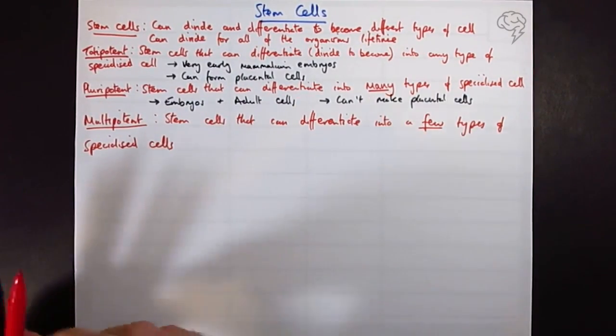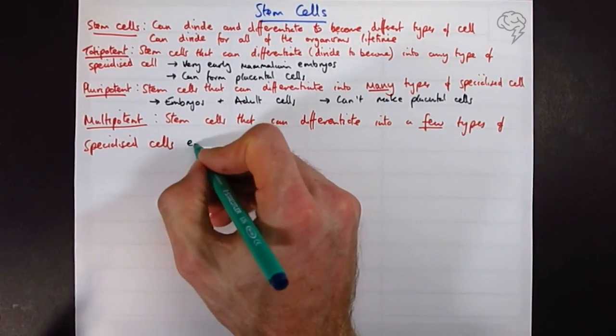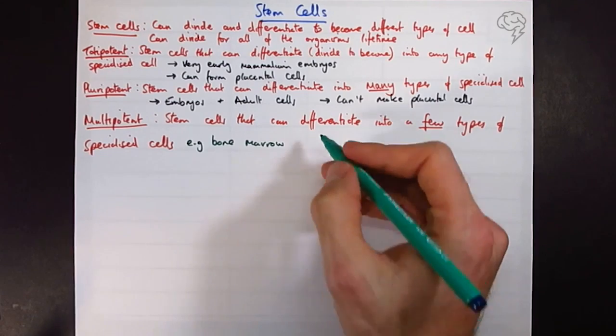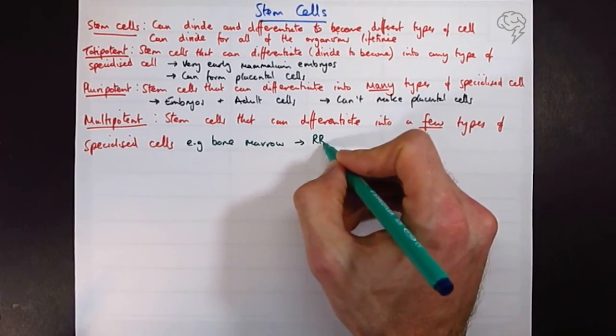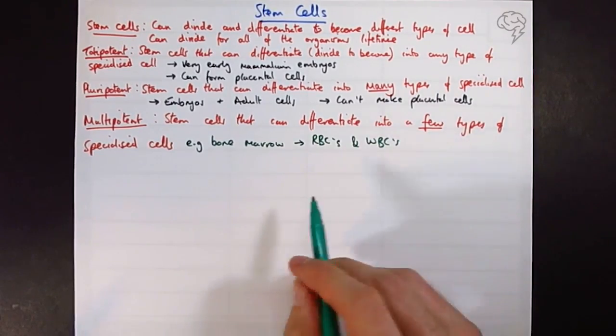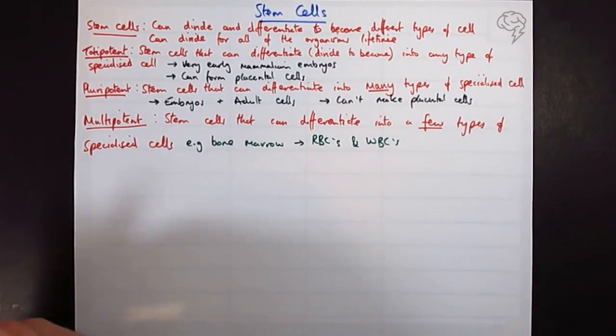The examples we're going to give here are going to be, e.g., bone marrow. This can form red blood cells, RBCs, and we can form white blood cells. Of course they can divide for the organism's lifetime as well.